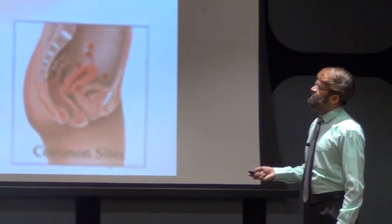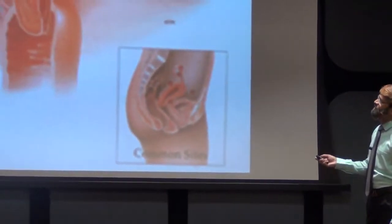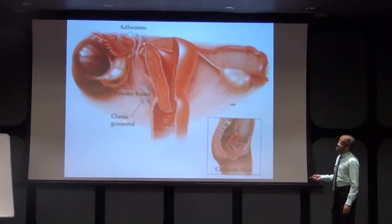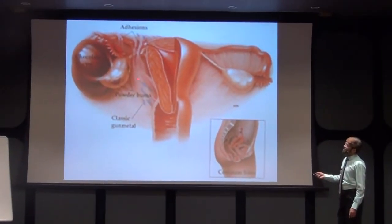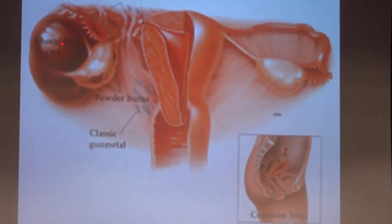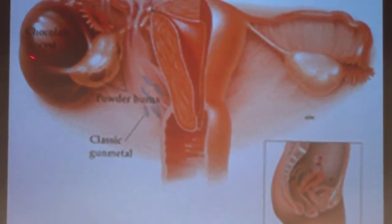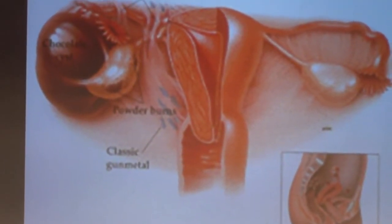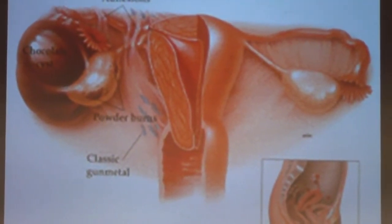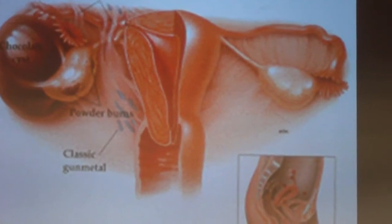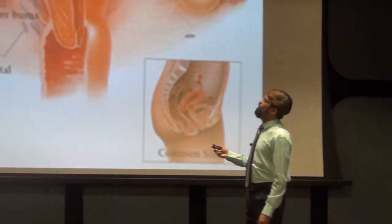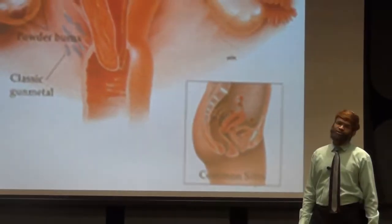Here you can see the powder burns in the uterine area, or classical gunmetal appearance outside at the support area, and here is the chocolate cyst ovary. The most important complication, which may lead to infertility troubles, is adhesions.